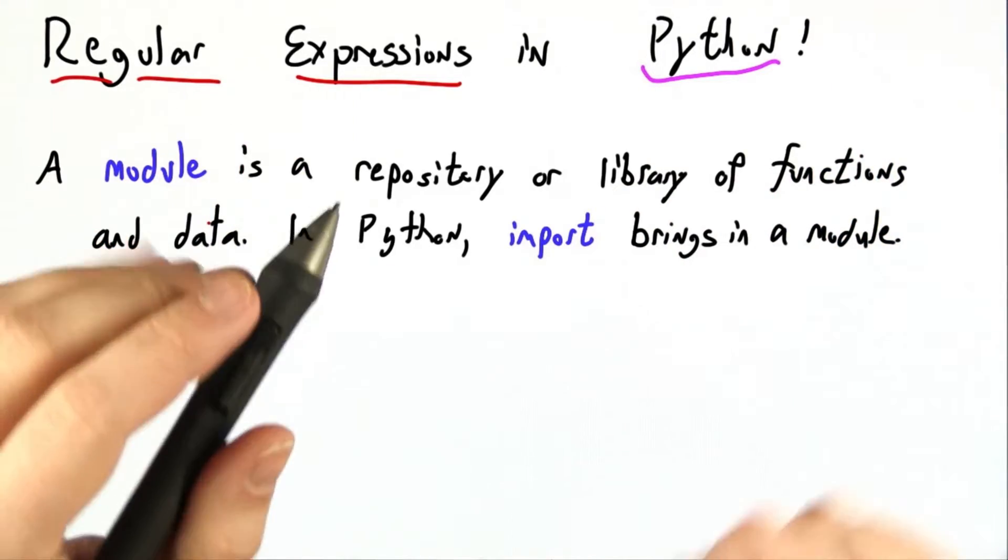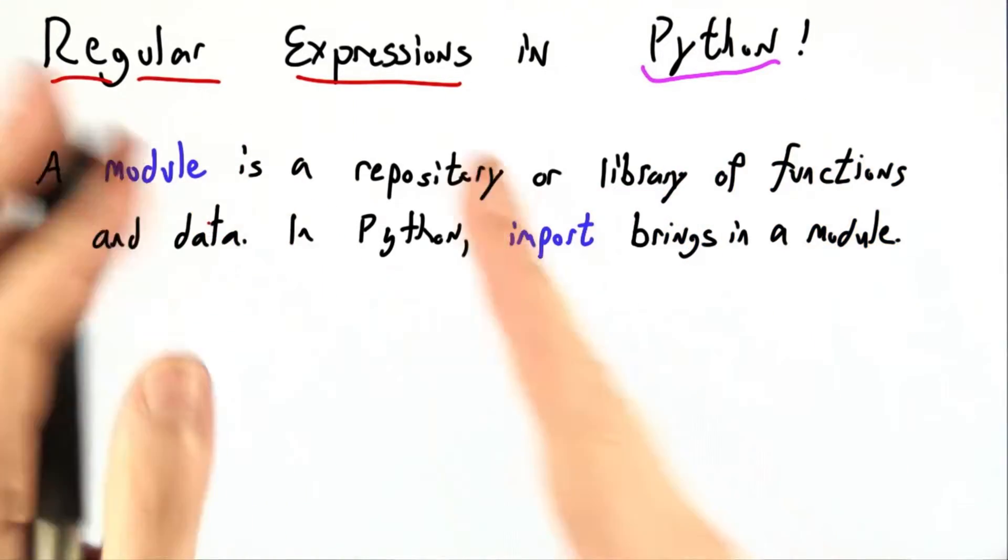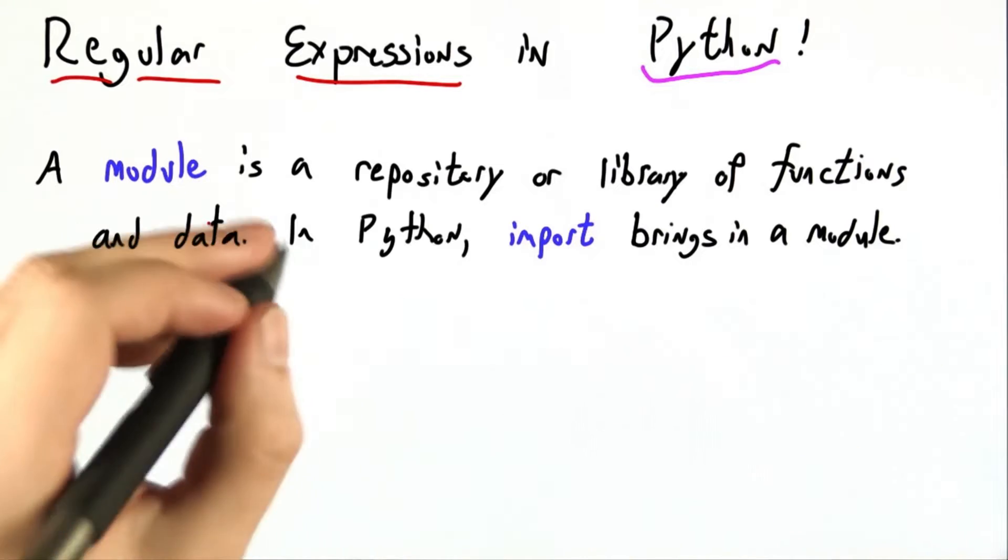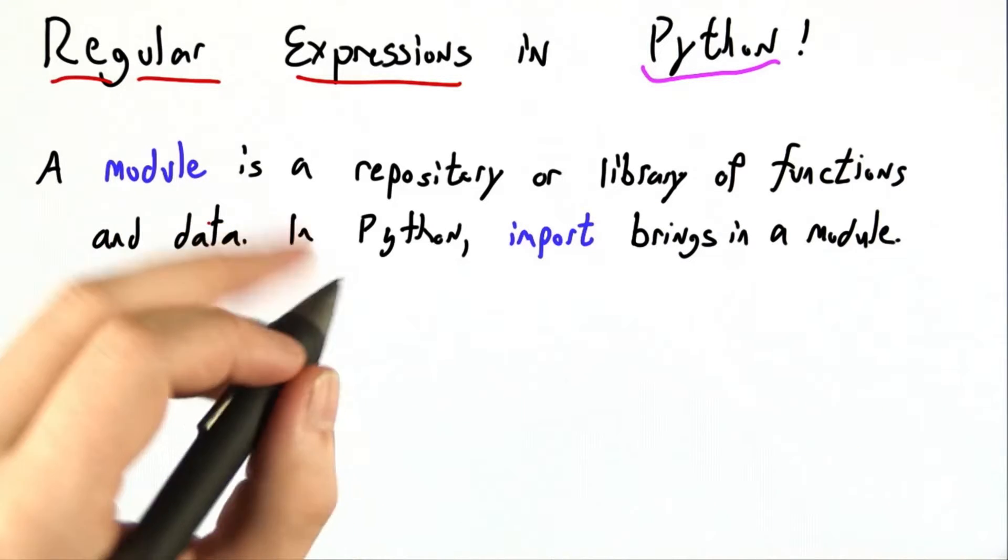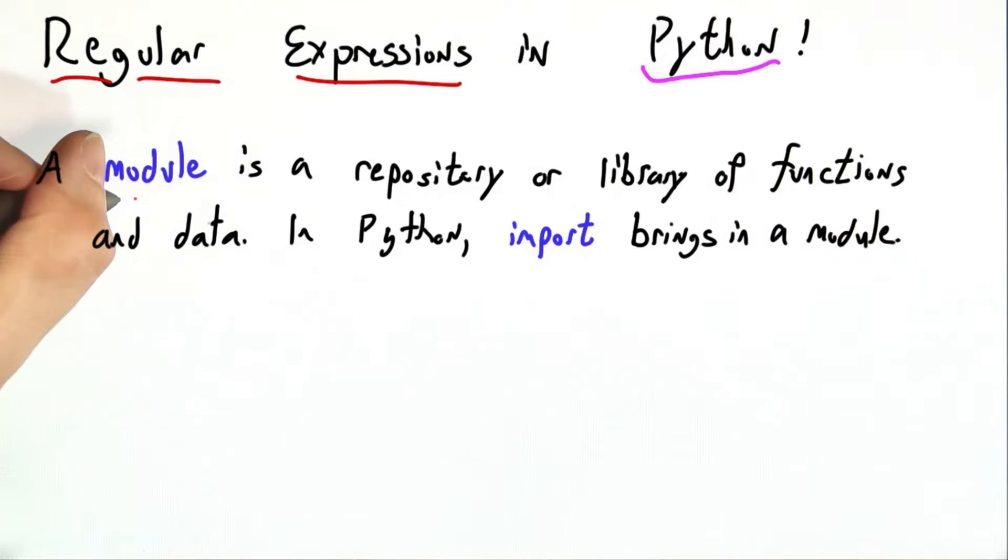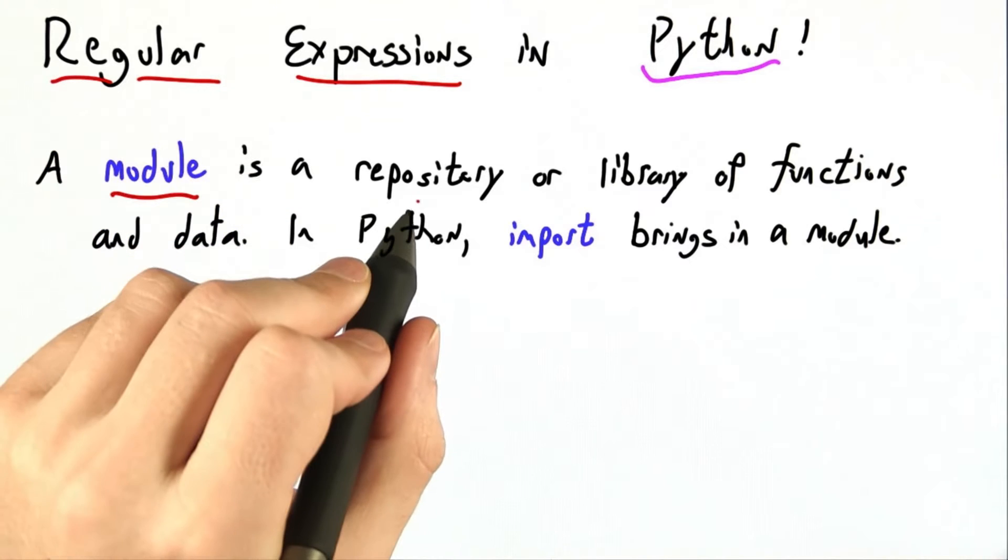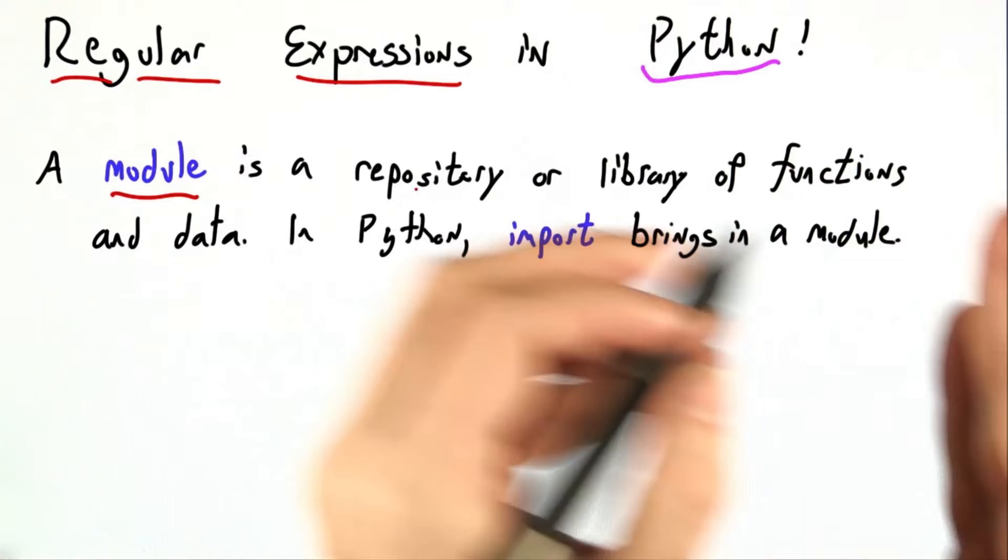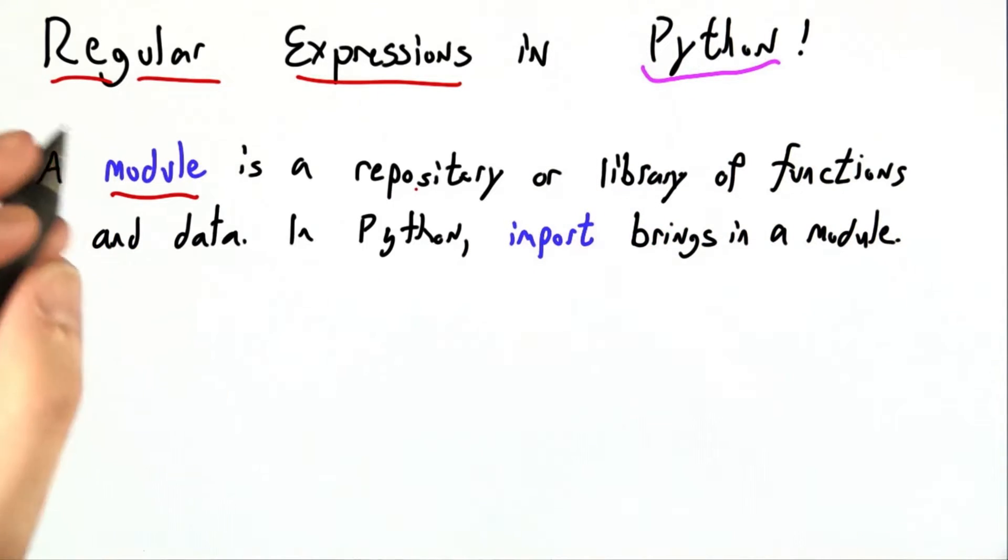Industrial software is often so big that it doesn't all fit on one page, so people have to break it up into chunks, just like a book is broken up into chapters or the body of human knowledge is broken up into many books. In computer science, a module is a repository or library of code, functions and data that do useful things.